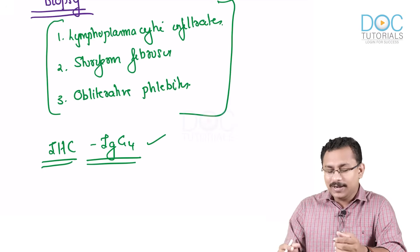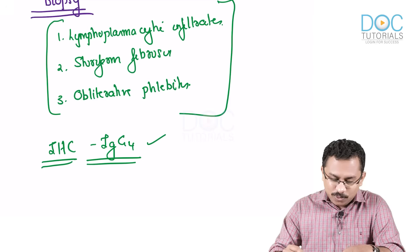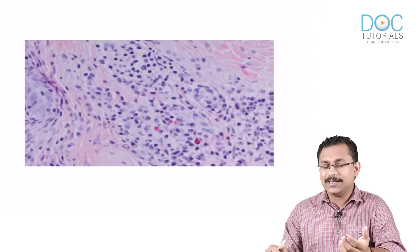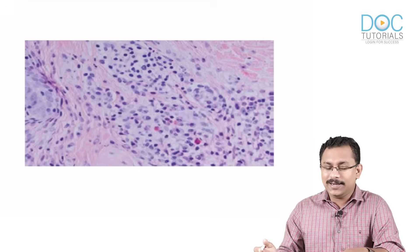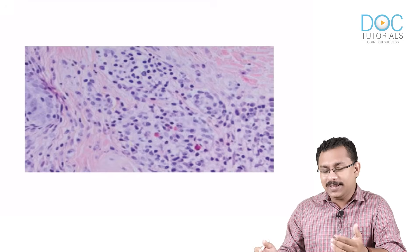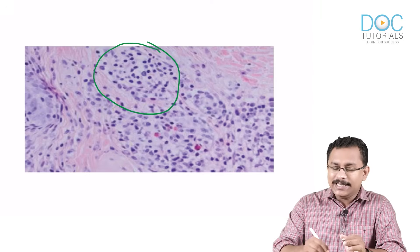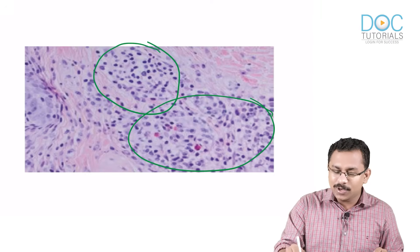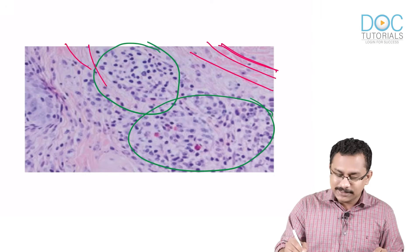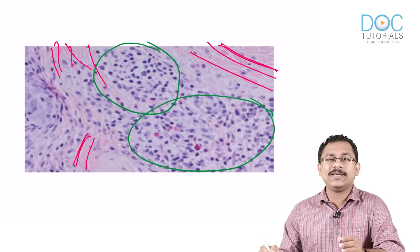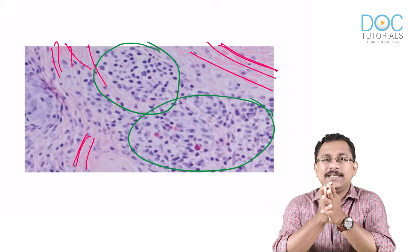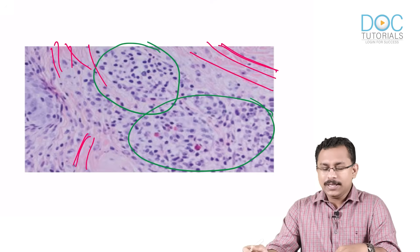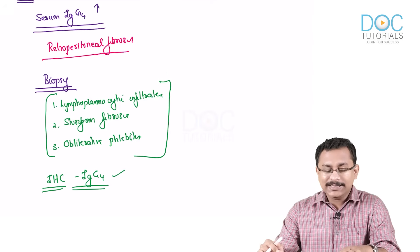Looking at the pathology slide: this is a biopsy from the salivary gland of a patient with IgG4-related disease. You can see sheets of lymphocytes — the lymphoplasmacytic infiltrate — along with extensive fibrosis representing the storiform pattern of fibrosis, and obliterative phlebitis. Immunohistochemistry on the same specimen will show positive IgG4 staining. That is how you diagnose IgG4-related disease.